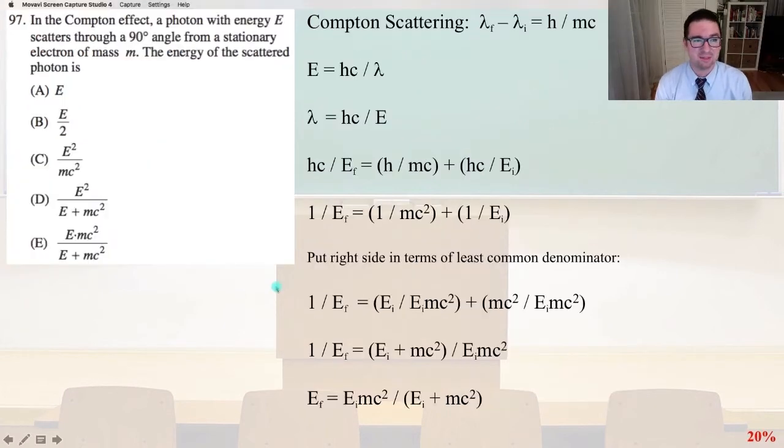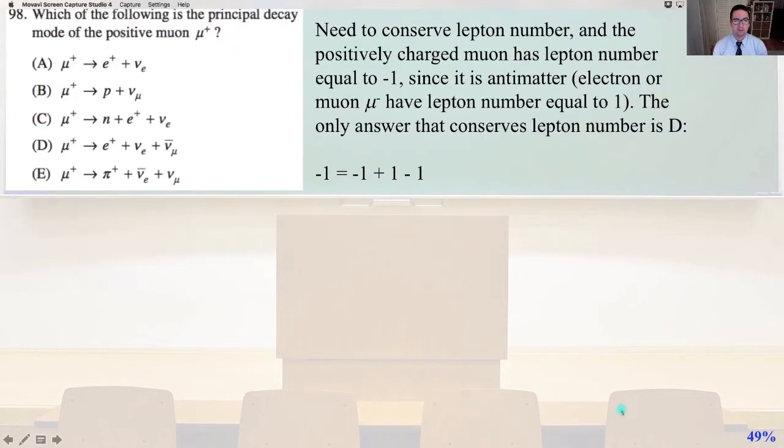Number 97, in the Compton effect, a photon with energy E scatters through a 90-degree angle from a stationary electron of mass M. The energy of the scattered photon is, Compton scattering is λ_final minus λ_initial equals H over MC. And we know that E equals HC over lambda, so lambda equals HC over E. And so 1 over E_f equals 1 over MC squared plus 1 over E_i, and we're putting the right side in terms of the least common denominator. So therefore, E_f equals E_i MC squared divided by the quantity E_i plus MC squared, and that is answer E.